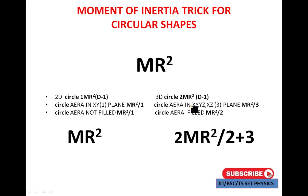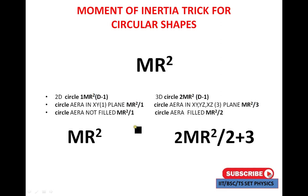For a circular area in XY, YZ, and XZ planes — that means covering three planes — the value is MR squared by 3. If the circular area is not filled, the value is MR squared by 1. If the circular area is filled, the value is MR squared by 2. In combined cases the total value is 2MR squared divided by (2 plus 3). Similarly, these three points apply for all circular shapes.